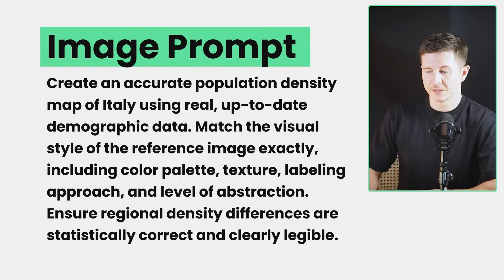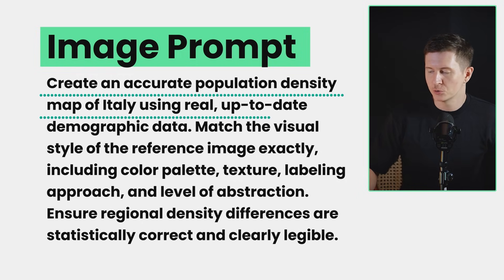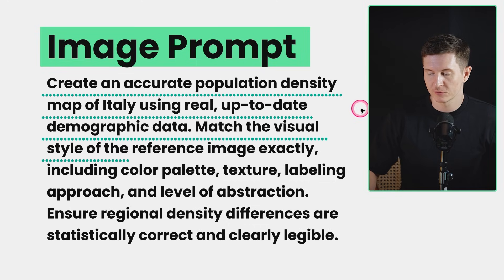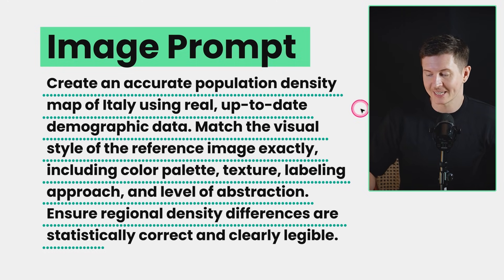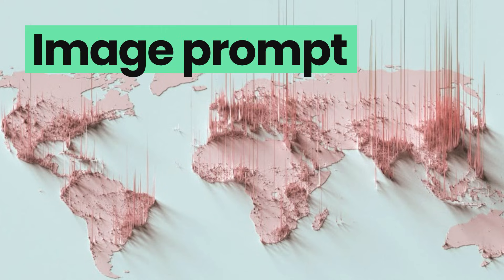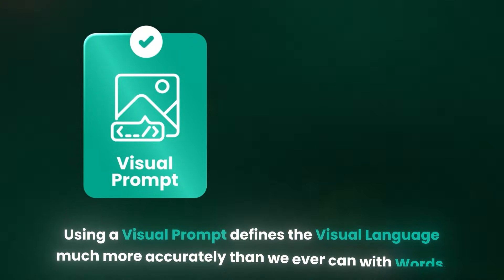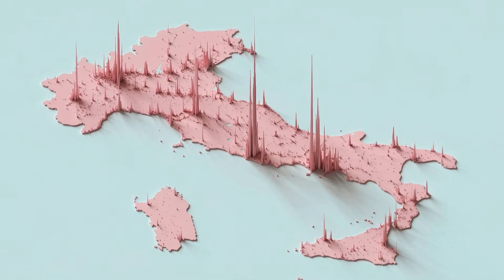Where things get interesting is where we start to combine all of these capabilities into one. We use this prompt: create an accurate population density map of Italy using real up-to-date demographic data, matching the visual style of the reference image exactly — including color palette, texture, labeling, approach, and level of abstraction — and ensure regional density differences are statistically correct and clear. I also added an image prompt, and I highly recommend using image prompts in these processes, because a visual prompt defines the visual language much more accurately than words. It is much easier to get to a specific idea of an image than to a specific relation of words.